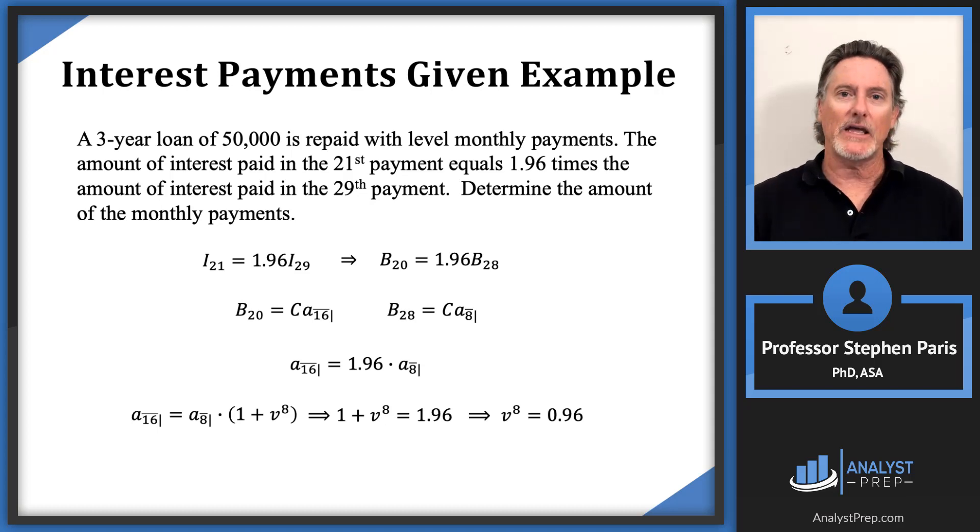And from here I can get what the interest rate i is. The i value here would be the monthly effective interest rate. So the v to the 8th of course is 1 plus i to the negative 8 power. Solve that for i and you get that the i value that corresponds to v to the 8th being 0.96. The i value is 0.0051.